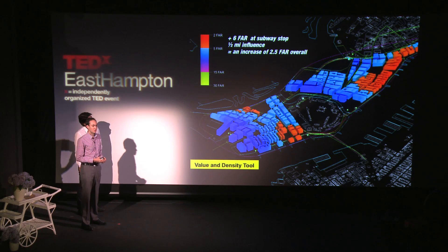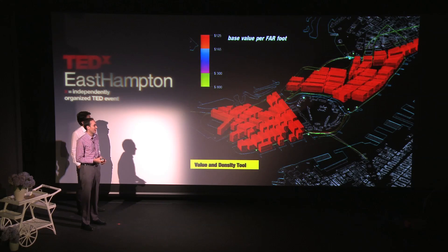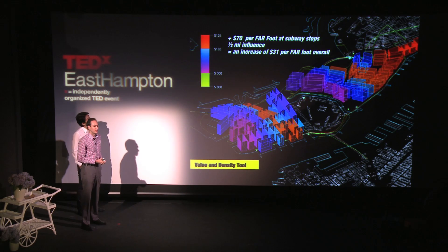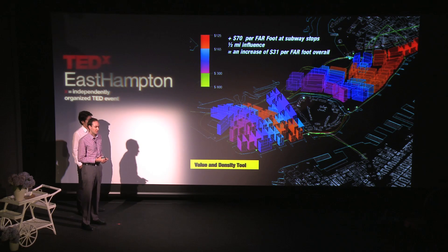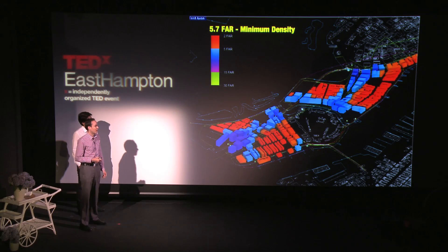We use this tool to first move density around the site and track the factors which affect it. In this case, we're adding 6 FAR at subway stops because you want more density at the subway stop, falling off at a half-mile influence. We paired that with a financial analysis looking at a base dollar value per FAR foot and tracking the influence at subway stops. We estimated an increased value of $70 per FAR foot at the subway stop, and that increase in value would actually pay for the construction of the subway lines. We use this tool to figure out how density would be distributed and what the minimum density needed is to pay for LoLo.